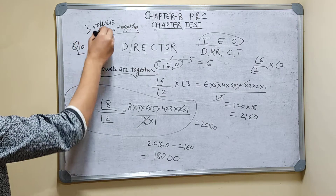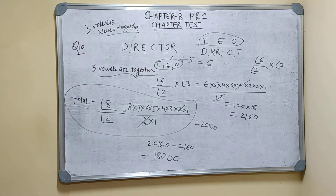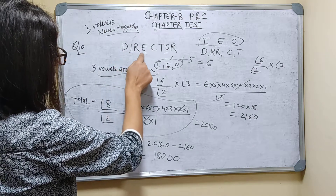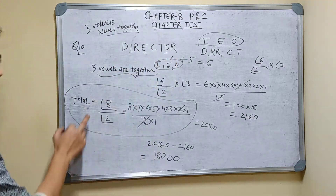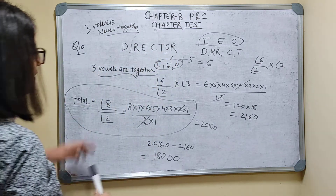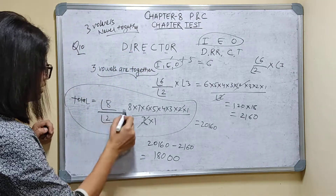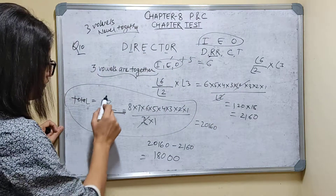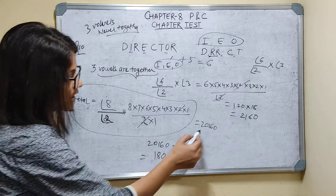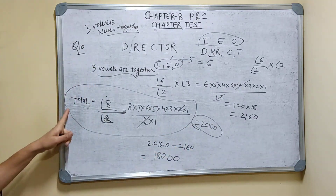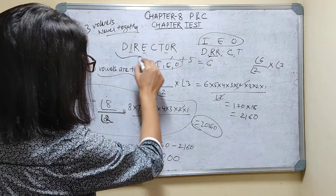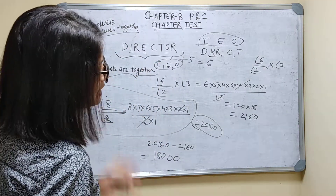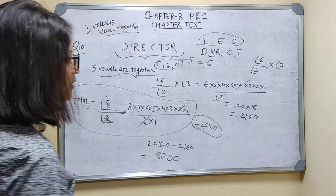But the question is asking that three vowels are never together, so I have to find the total arrangements. The word DIRECTOR has a total of eight letters — one, two, three, four, five, six, seven, eight. So total arrangements = 8!/2! because two R's are the same. That gives 20,160.